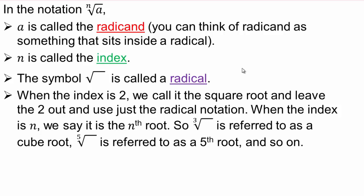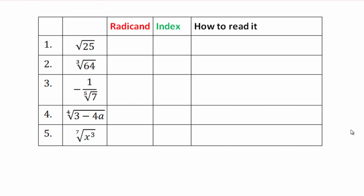When the index is 2, we call it square root and leave the 2 out, using just the radical notation. When the index is n, we say nth root — so that would be cube root, fifth root, and so on.